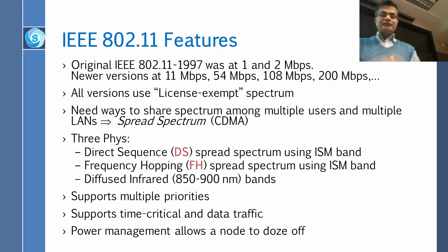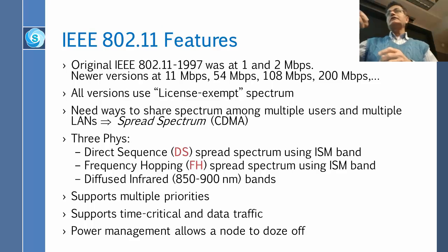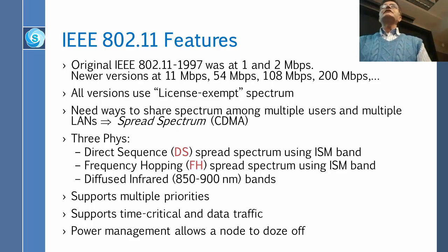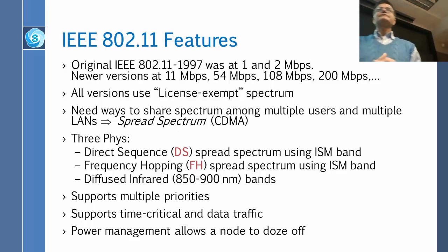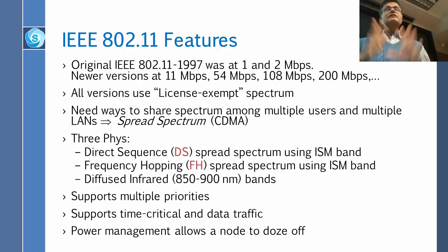802.11 had three physical layers. The first was direct sequence spread spectrum (DSSS). The second was frequency hopping spread spectrum. The third was diffused infrared — the same technology your remote controls use, operating at near-infrared wavelengths. Previously, computers used infrared ports for short-distance communication, allowing you to align a computer with a printer to transfer data wirelessly. That technology is no longer used. 802.11 also supports multiple priorities, time-critical and data traffic, and allows power management so nodes can sleep when not active.